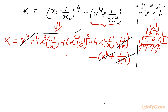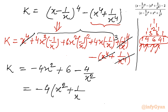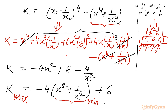Now we can cancel two pairs of terms: x^4 cancels, and 1/x^4 cancels. Only three terms remain. So k equals -4x^2 + 6 - 4/x^2. Taking minus common: k = -4(x^2 + 1/x^2) + 6. Now, because we are calculating the maximum value of k, the term (x^2 + 1/x^2) should have its minimum value — once it is minimum, k will be maximum.